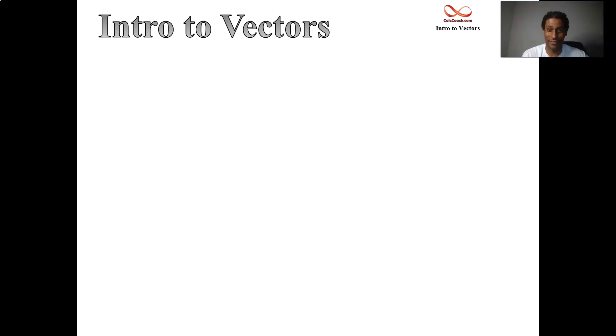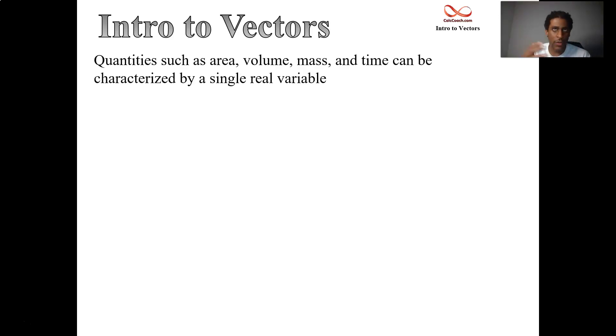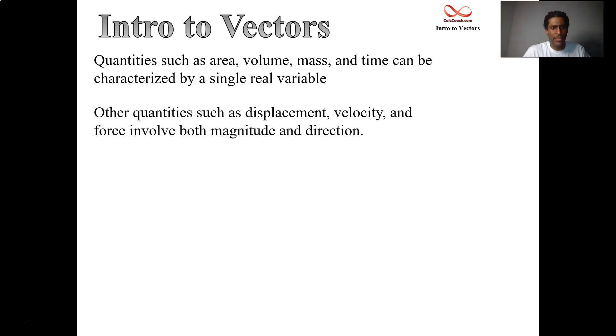All right, what is a vector? Well, we're so used to having a single variable where we just measure one quantity. Well, there's a need sometimes to be able to measure more than just that quantity. Maybe that quantity also has a direction associated with it. If you have displacement or velocity, then there's both a number that you tag to that—how far you moved, how fast you're going. There's a number you tag to that, but there's also a direction that you can tag to it. And so the number is going to be called magnitude, and then the direction is going to be part of the mix as well.